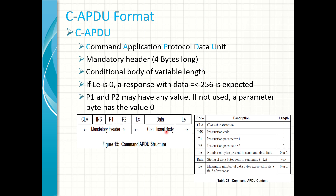The conditional body has a variable length depending on the command. It contains the coded data length (LC), the data itself, and the length of expected data (LE). LE is the length expected in the response. If LE is zero, it means a response with data of length between zero and up to 256 bytes is expected.